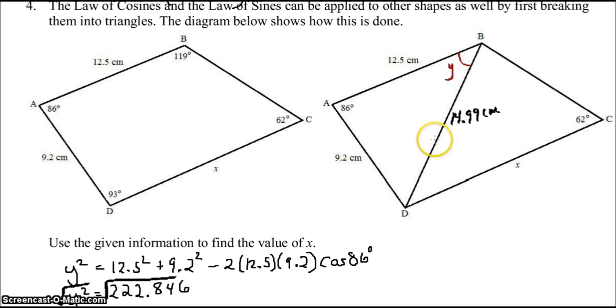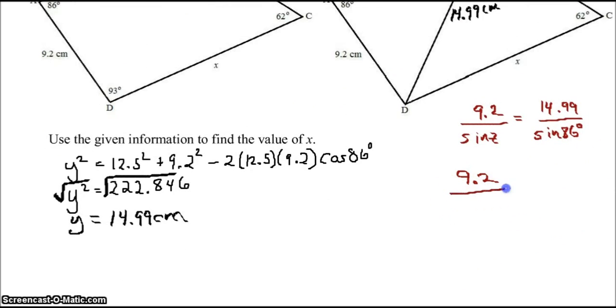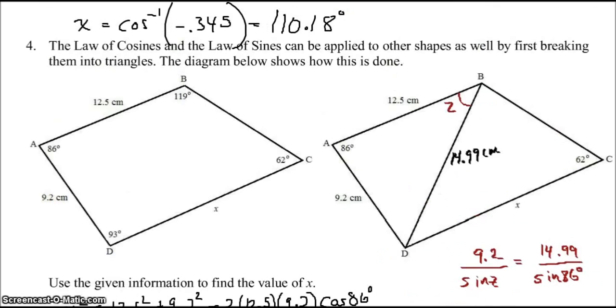Let's just call this one Y for a second. Well, we already used Y. Let's call it something else. Z. Notice that the law of sines would tell us 9.2 over the sine of Z equals 14.99 over the sine of 86. Which means 9.2 over 14.99 times sine of 86 equals the sine of Z. And so Z would be the inverse sine of all of that, which let's call that W.